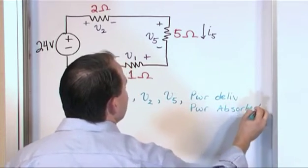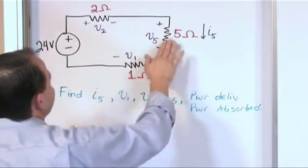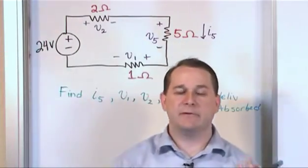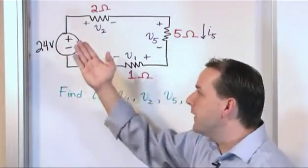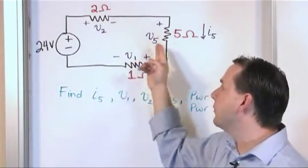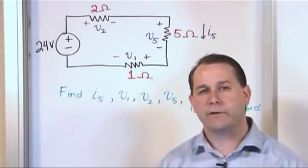And then on top of all of that, we want to know the power delivered and the power absorbed. In other words, we want to know how much power is being delivered by the source, and we want to know how much power is being absorbed by all these resistors. And we've already learned from previous problems that they have to be equal and opposite. So if we find out that 10 watts of power is being delivered by the source, then when we calculate the power absorbed by everything else, it has to be equal to 10 watts when you add it all together. We've already talked about that.